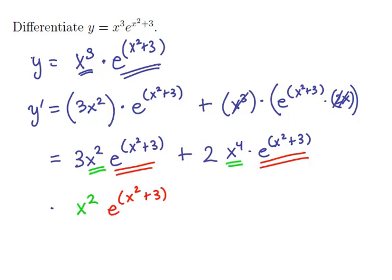When we factor that out, we're going to be left with the following. We'll have a 3 left over from the first piece, and we're going to have a 2x squared left over from the second piece.